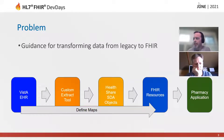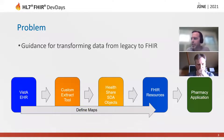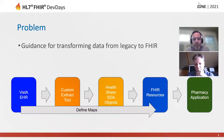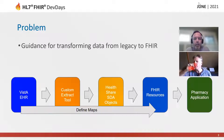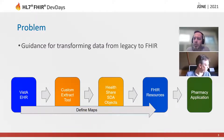We are pulling legacy data out of the VA's EHR called Vista and exposing it in FHIR resources for consumption by a pharmacy application. You'll see five boxes in the diagram, not just two, because there's an integration engine in the middle called HealthShare. There's an extract tool that pulls data out of Vista for HealthShare, and then there are FHIR resources between HealthShare and the pharmacy application.